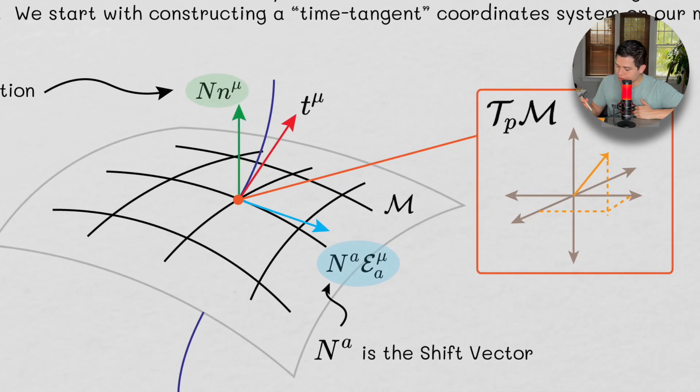So what we're really doing is we're creating a coordinate system. And this coordinate system, so n, big n, little n mu, and big n^a, and epsilon mu a, these two things are defining a coordinate system in which T mu is a vector within that coordinate system. Now we're going to take a look at the nature of these two things now.